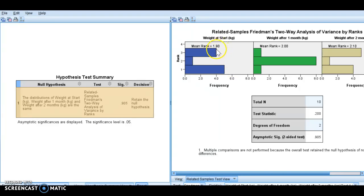So it's looking at the ranks, remember? So the difference between 1.9, 2.0, and 2.1, basically this significance value is telling us that there is not a significant difference between these ranks.